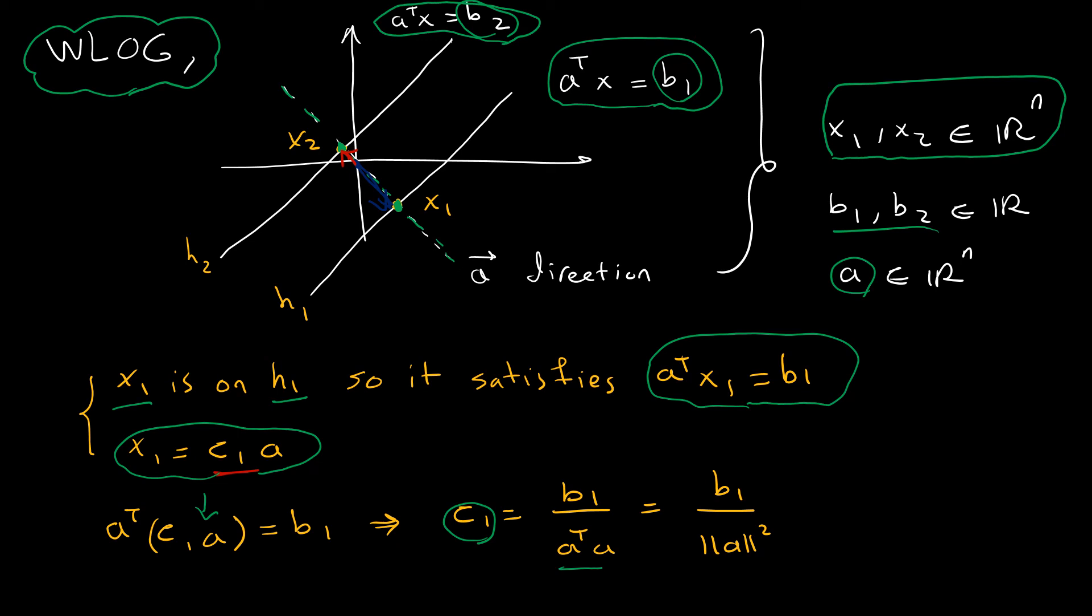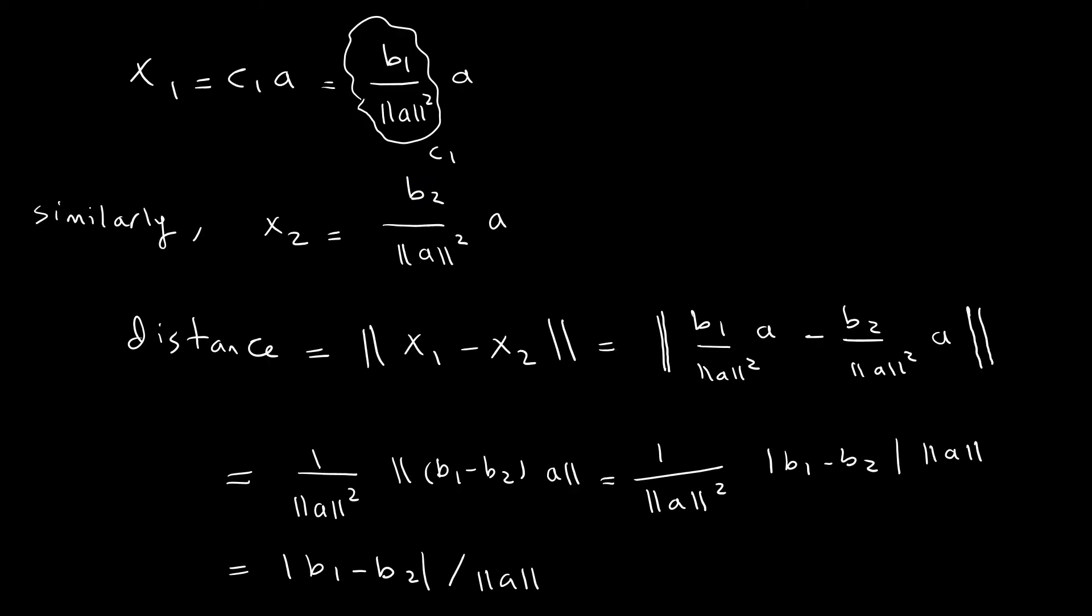Similarly, I can do this for x2 and get x2 = (b2 / ||a||^2) * a. So now I have two points on the two different hyperplanes, and I want to find the distance between them.